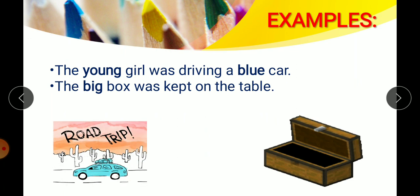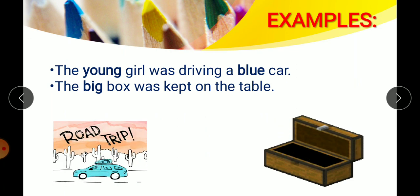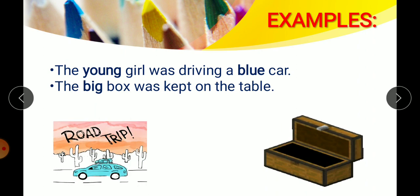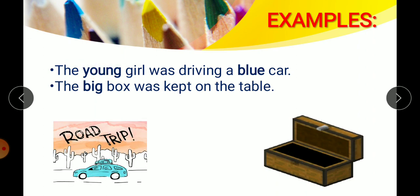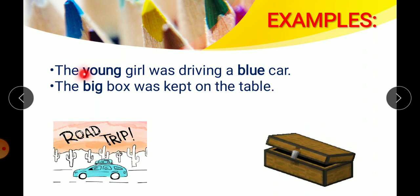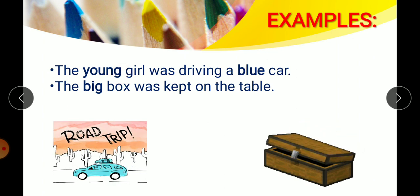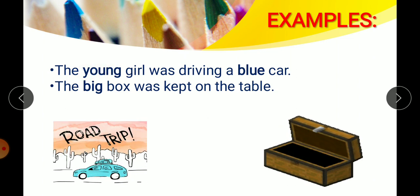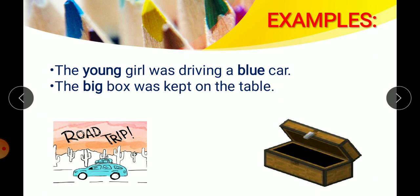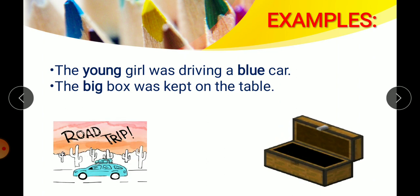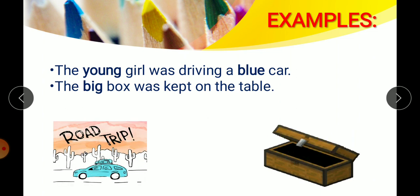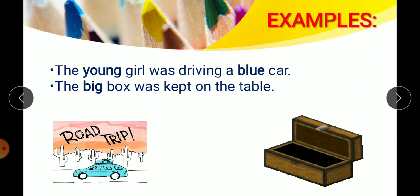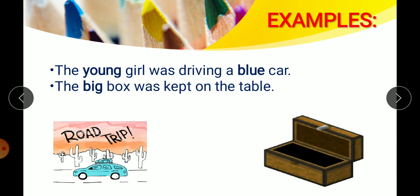Let's understand with examples. 'A young girl was driving a blue car.' Here, 'young' is adjective of quality — it tells us the quality of the girl, how she is: she is young. And 'blue' is also adjective of quality — it tells us about the color of the car. So both the words 'young' and 'blue' are adjectives of quality.